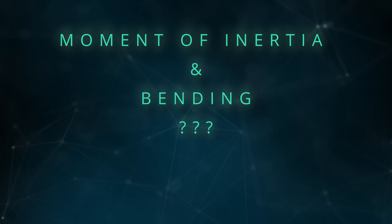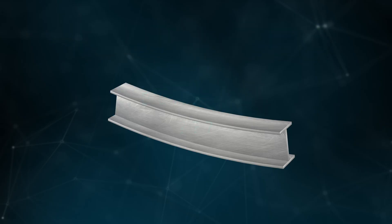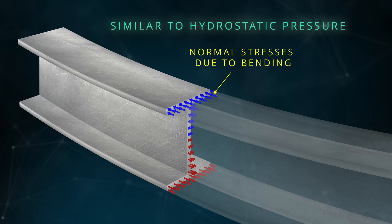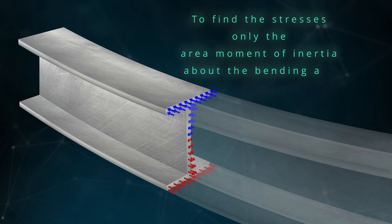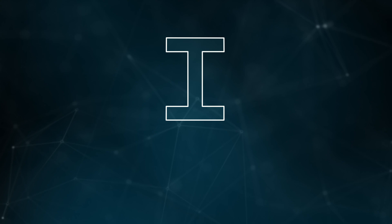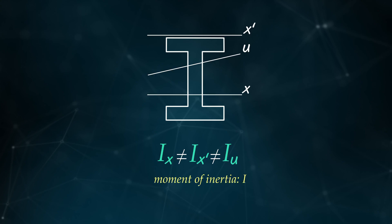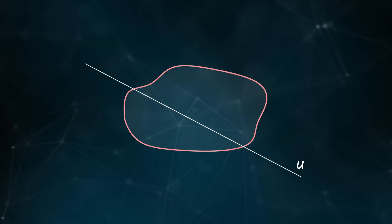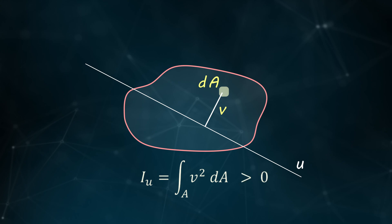Why is the area moment of inertia so critical in bending? Similar to hydrostatic pressure, normal stresses due to bending vary linearly across the cross-section in the elastic range and are perpendicular to the surface. For any section with a known area moment of inertia, we obtain the stress distribution without writing equilibrium equations. The value depends on the axis chosen; in engineering calculations it is taken about the neutral axis, where bending stresses are zero. For linear elastic homogeneous materials, the neutral axis always passes through the centroid. The area moment of inertia is always greater than zero.